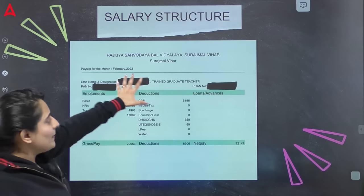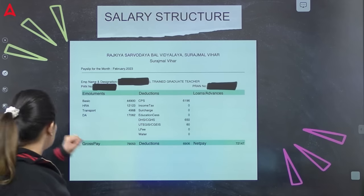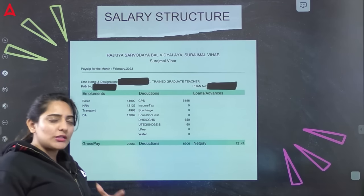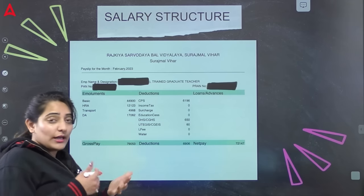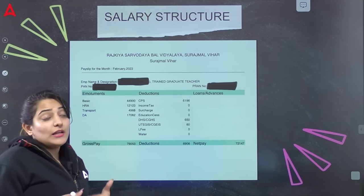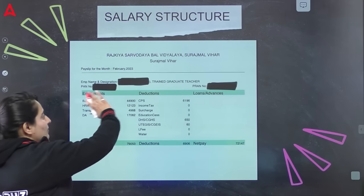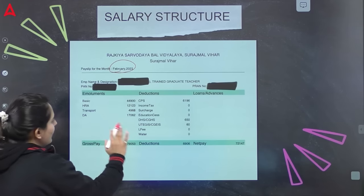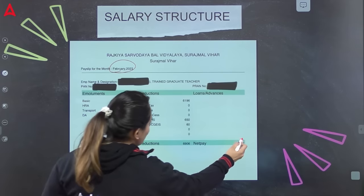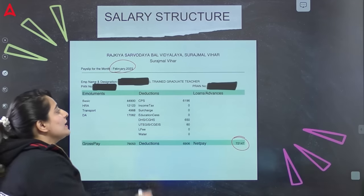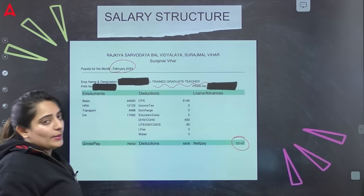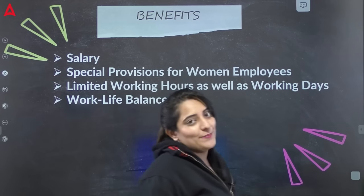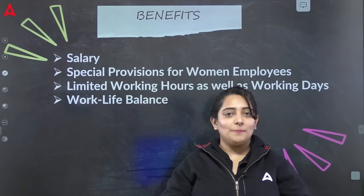मेरे पास एक student की salary structure है जो उन्होंने DSSB join करने के बाद मुझे share की थी। कुछ promotions के बाद, February 2023 की उनकी salary TGT post पर 72,147 रुपये बन रही थी, जो कि एक बहुत अच्छा prospect है। Privacy का ध्यान रखते हुए उनकी personal details हटा दी हैं।